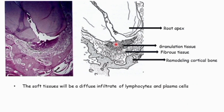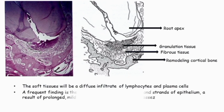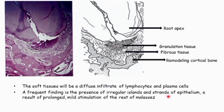Inside the central zone of granulation tissue, we can find infiltration of lymphocytes and plasma cells. In addition to it, we can also see irregular islands and strands of epithelium inside the central zone of granulation tissue, and this is because of prolonged and mild stimulation of the rests of Malassez.